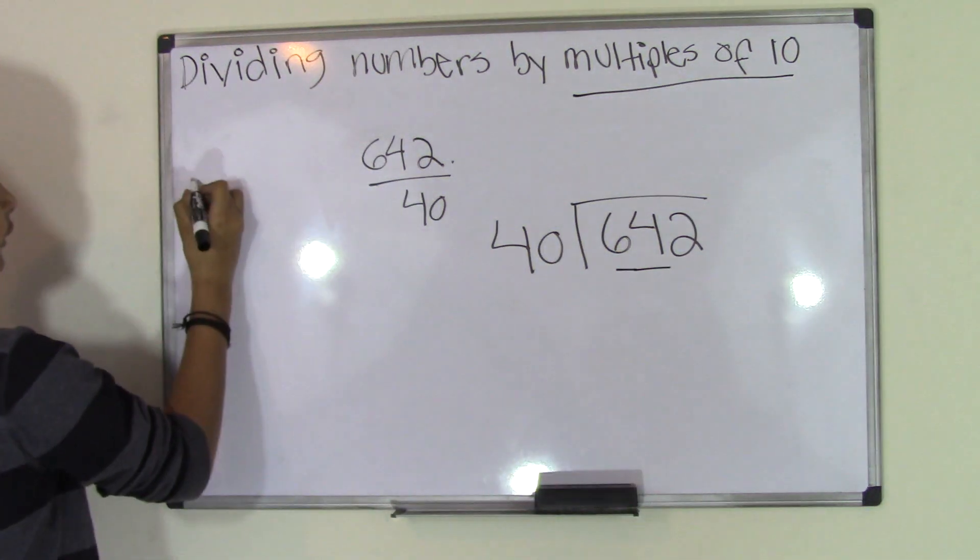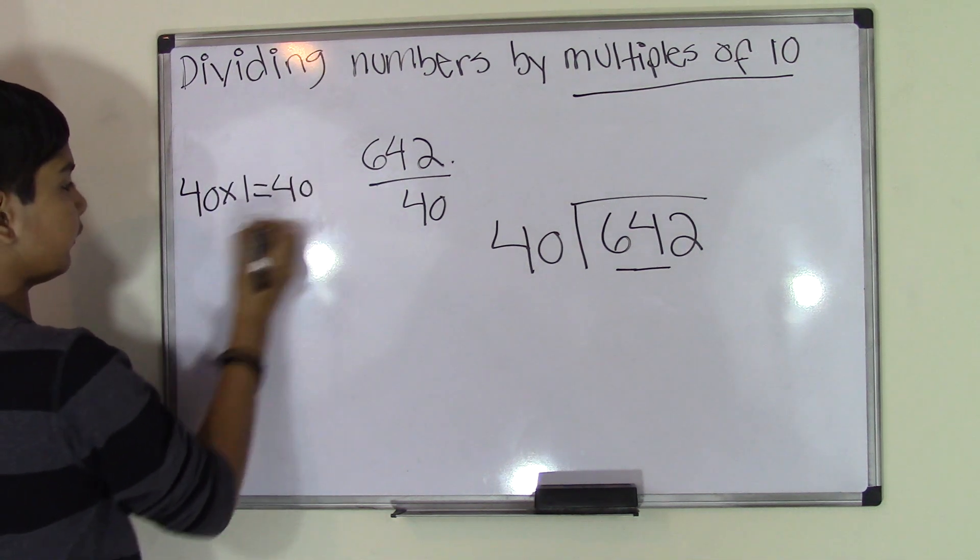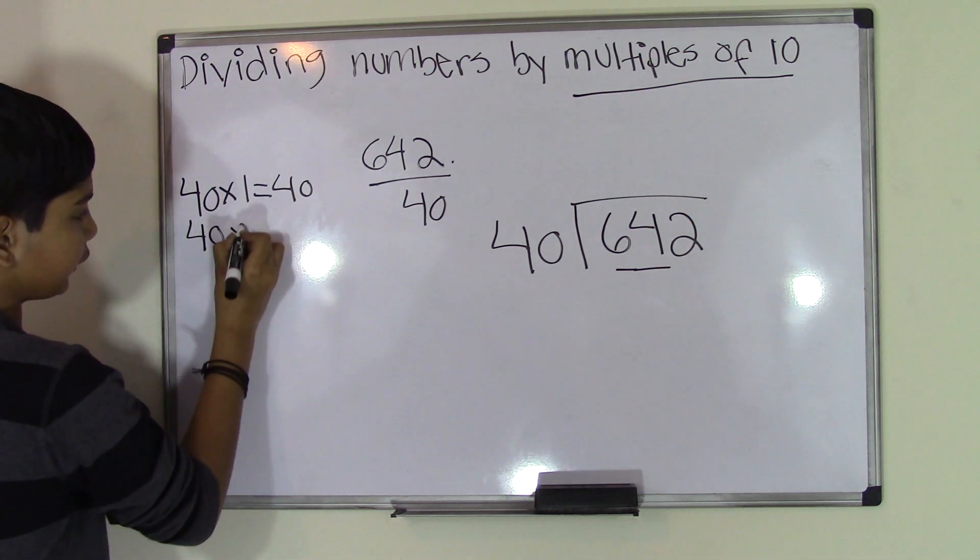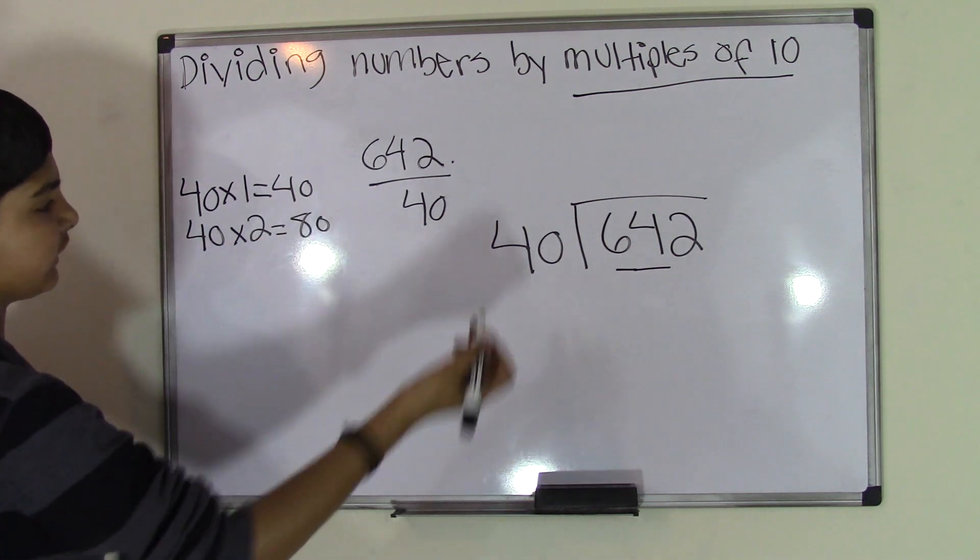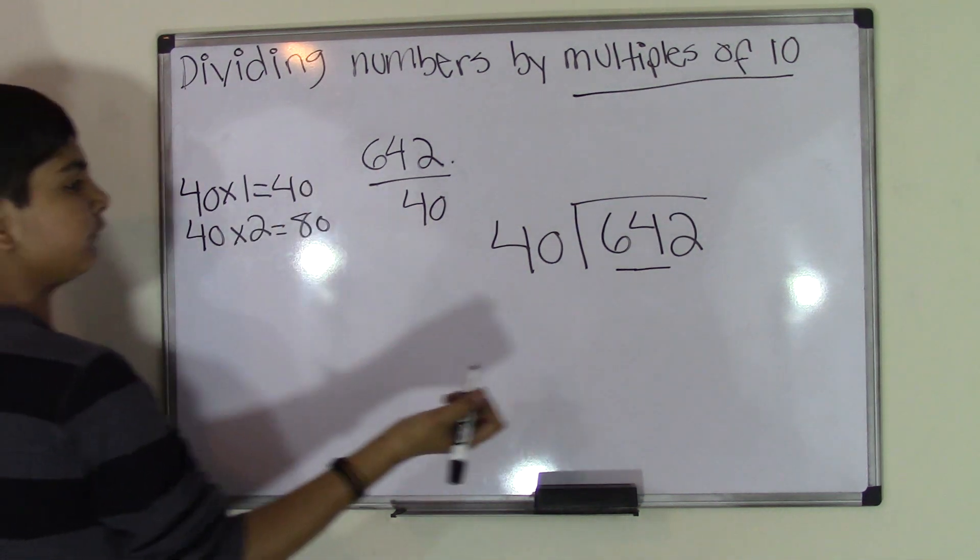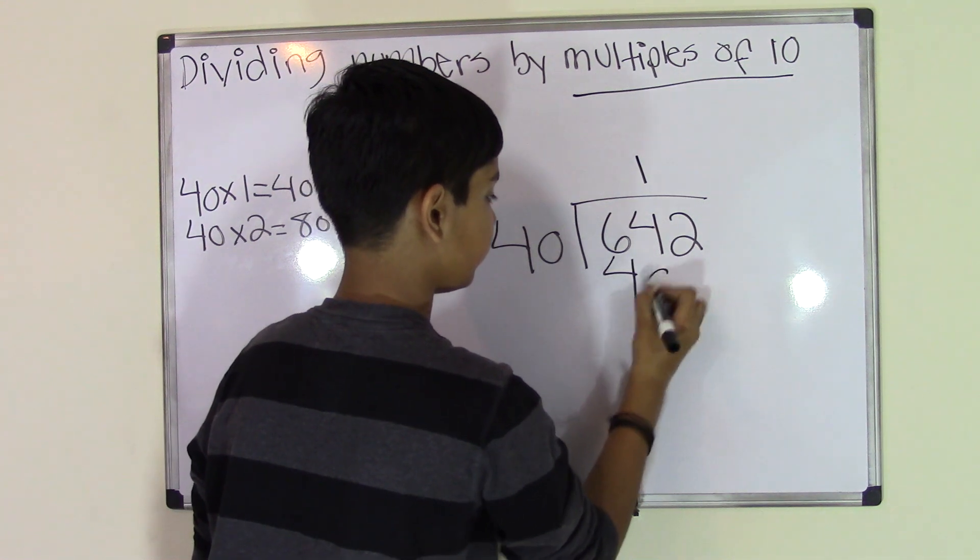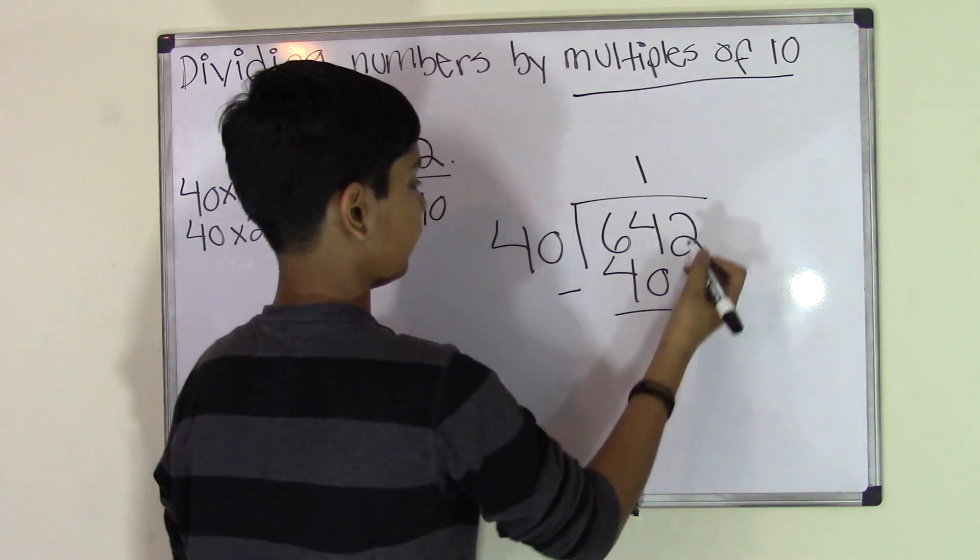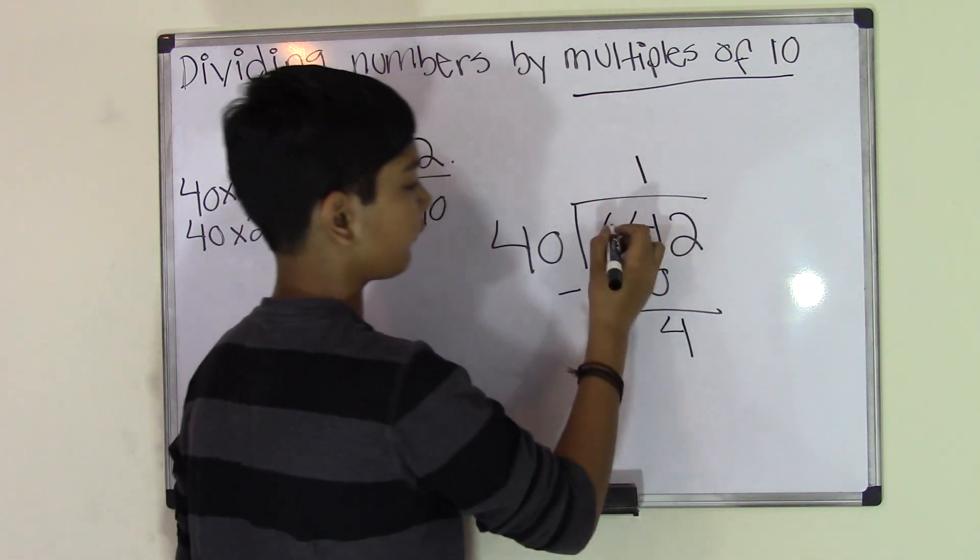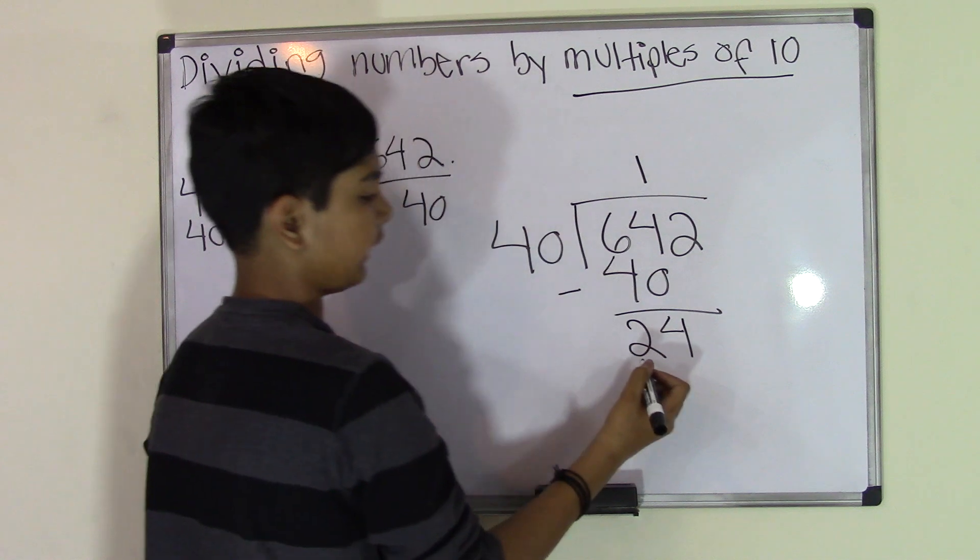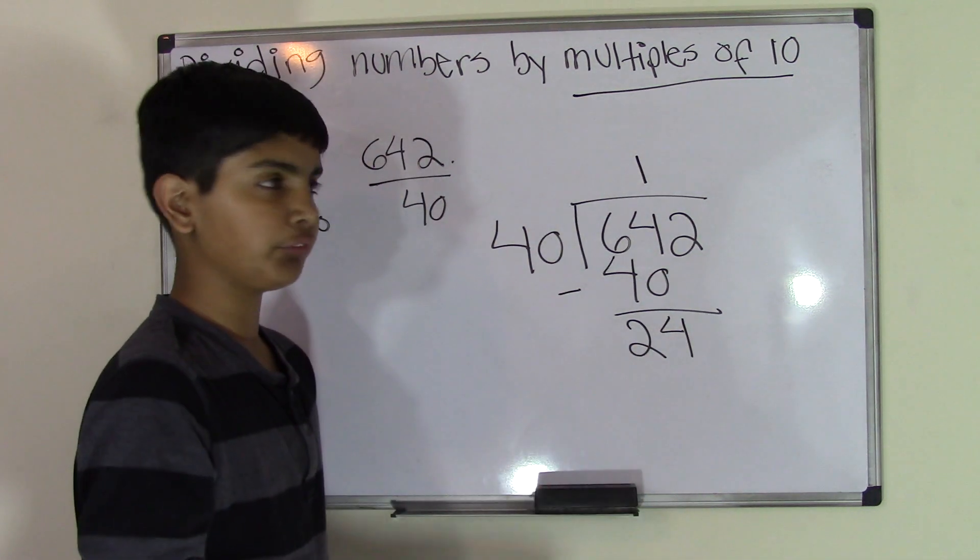Let's go on the times table of 40 to see if we get a closer answer. You know that 40 times 1 is 40. 40 times 2 is 80. Oh, 80 is larger than 64, so we'll have to go with 40 times 1. So 40 times 1 is 40. Now we subtract. 4 minus 0 is 4, 6 minus 4 is 2.